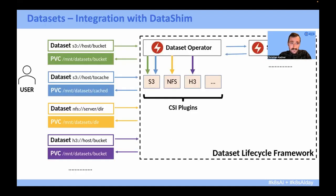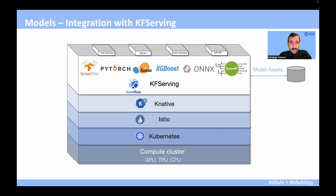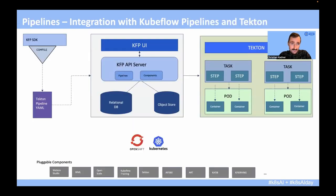Some of the technologies integrated in MLX: Datashim is used to manage datasets. With Datashim, we can easily create persistent volumes and get data from S3, HDFS, or NFS, reducing the amount of work end-users have to do to work with datasets in Kubernetes. For models, there's an integration with KFServing or KServe, or models can be served natively with Kubernetes. MLX is built on Kubeflow Pipelines with Tekton — the difference being the execution engine, as Kubeflow Pipelines defaults to Argo while we use Tekton. And of course it runs on OpenShift and Kubernetes.